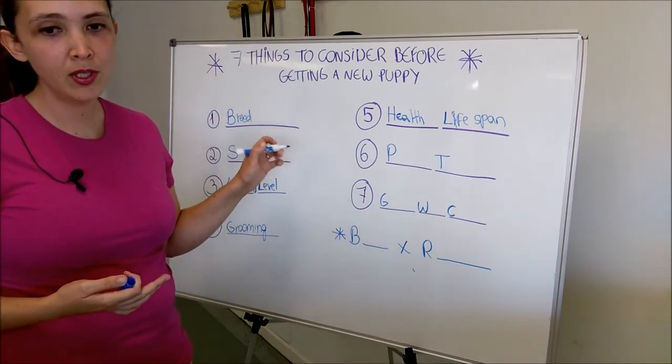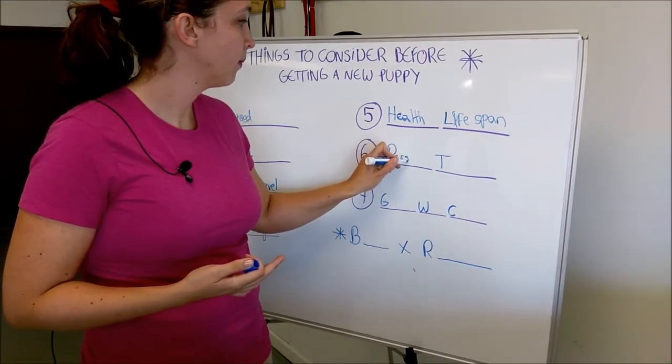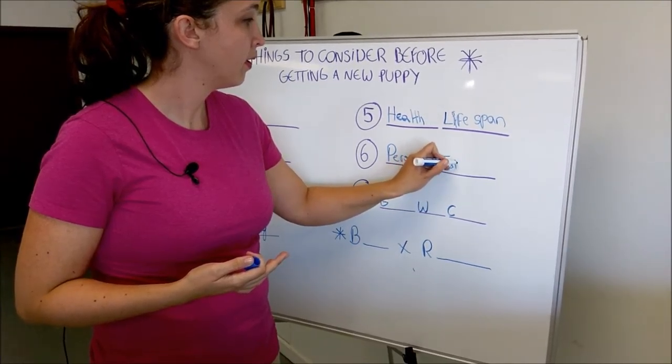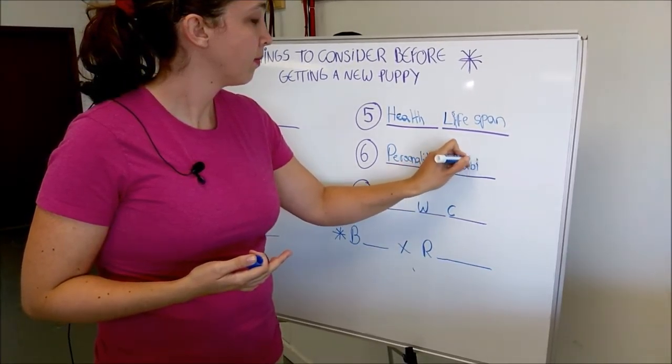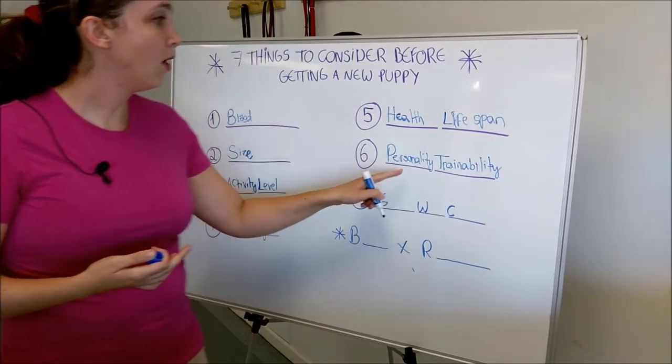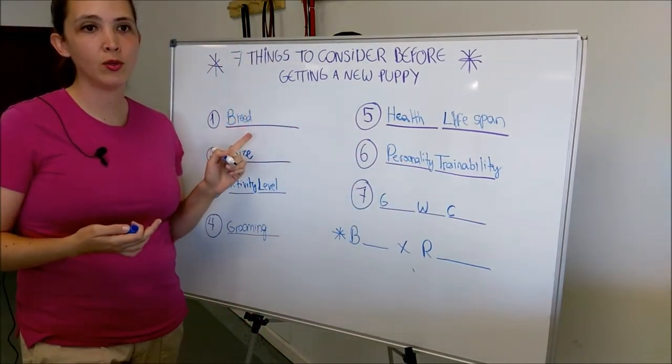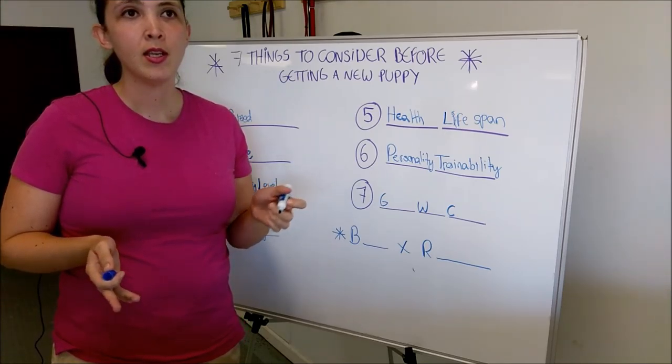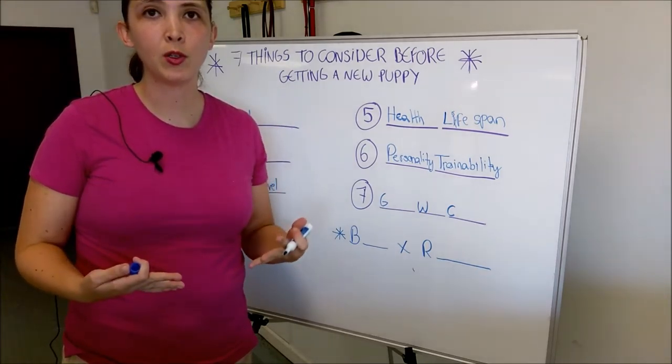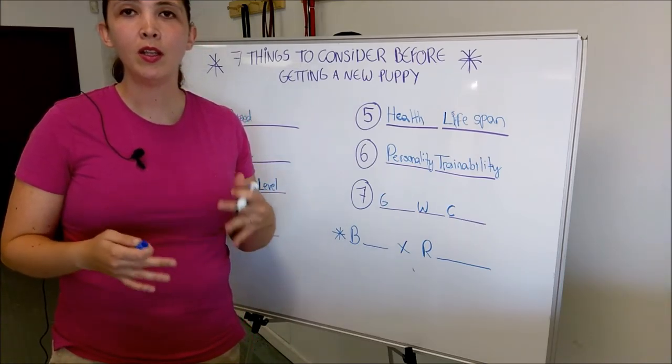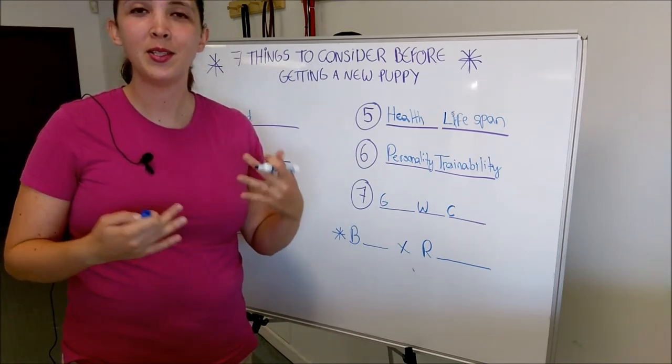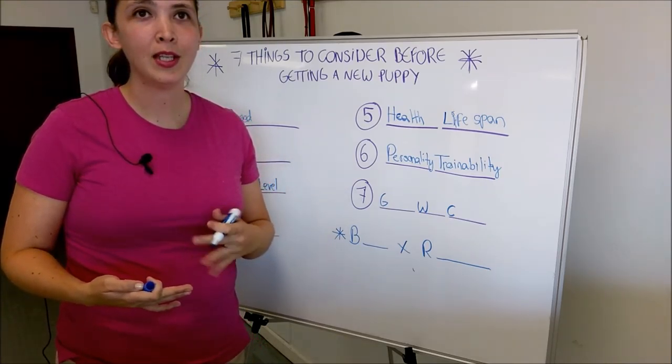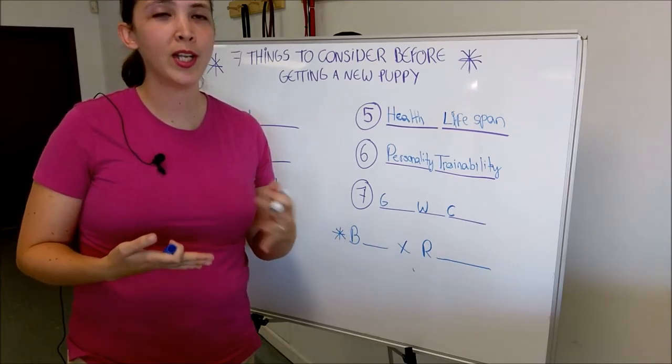The next thing that I wanted you to consider is personality and trainability. That also goes together with your breed choice. As a trainer, I have worked with a wide array of different breeds. Some dogs are very eager to work with you and to be trained and learn new things, while others not so much. And there's also the dogs that don't like being told what to do. They think of themselves as more alpha, and so they can be a little prone to more nasty behavior.